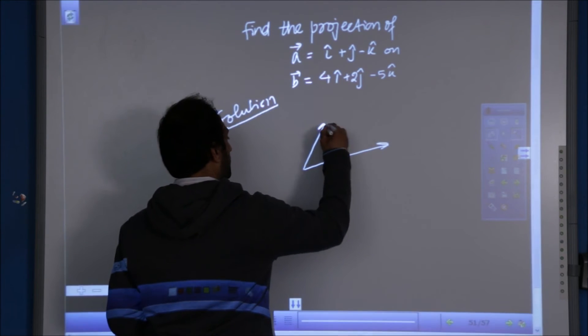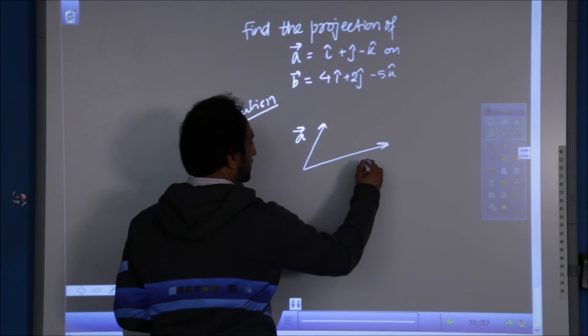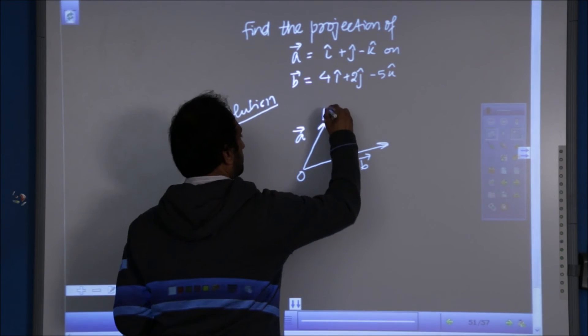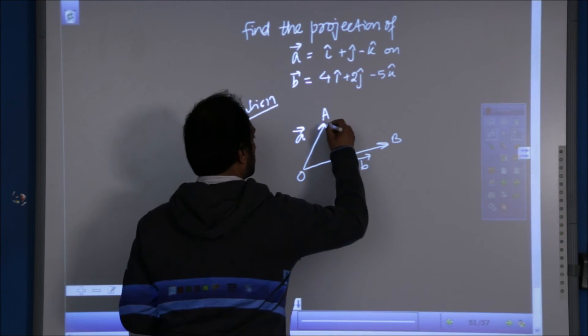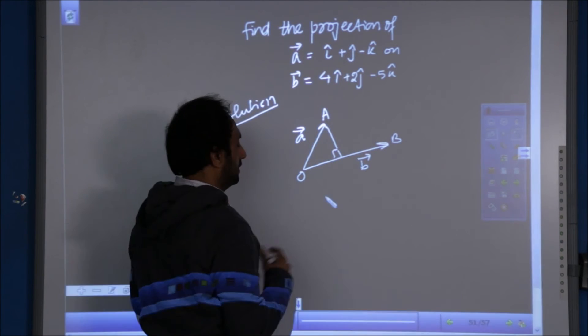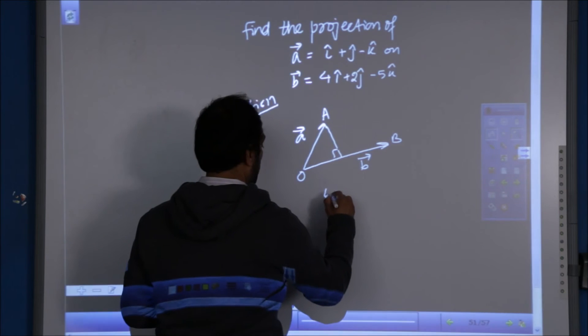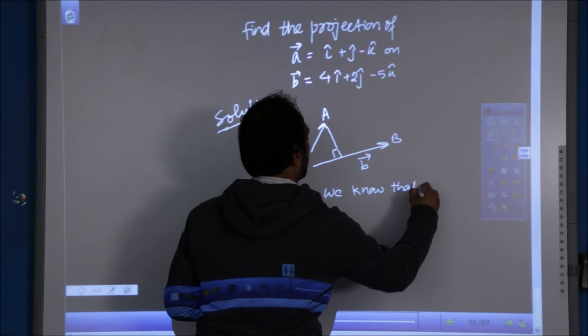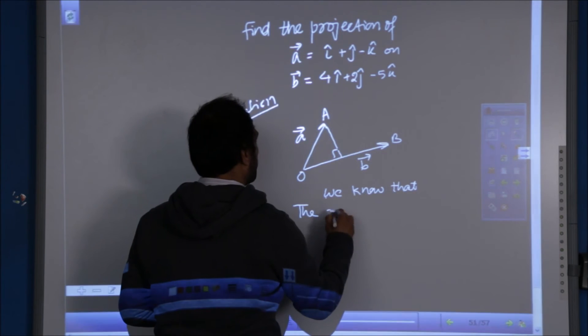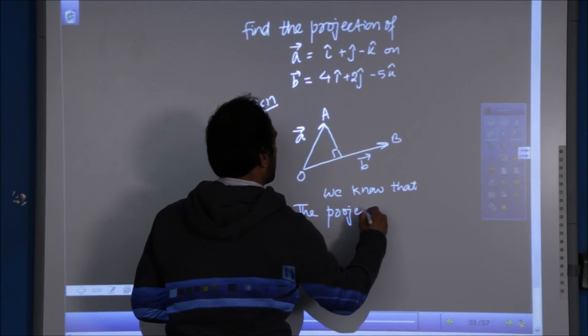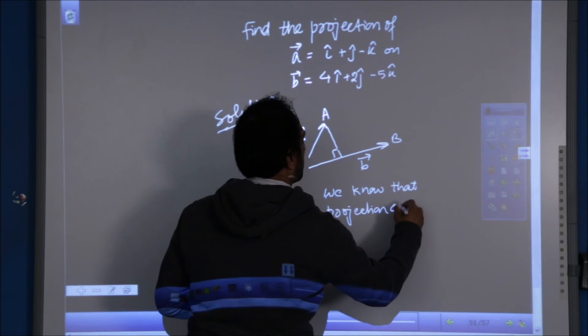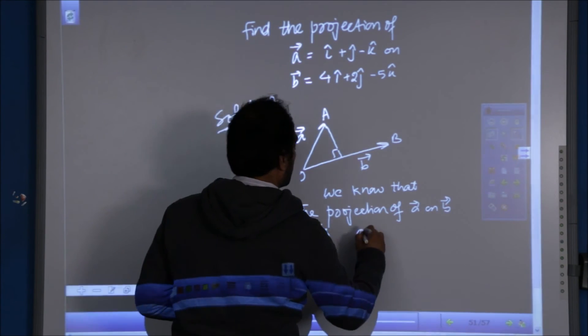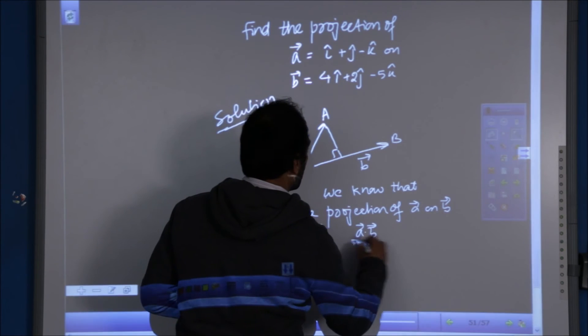We will draw a rough diagram indicating A vector, B vector, a very rough diagram and a perpendicular. Then write the formula that we know that the projection of A on B is A dot B over mod B.